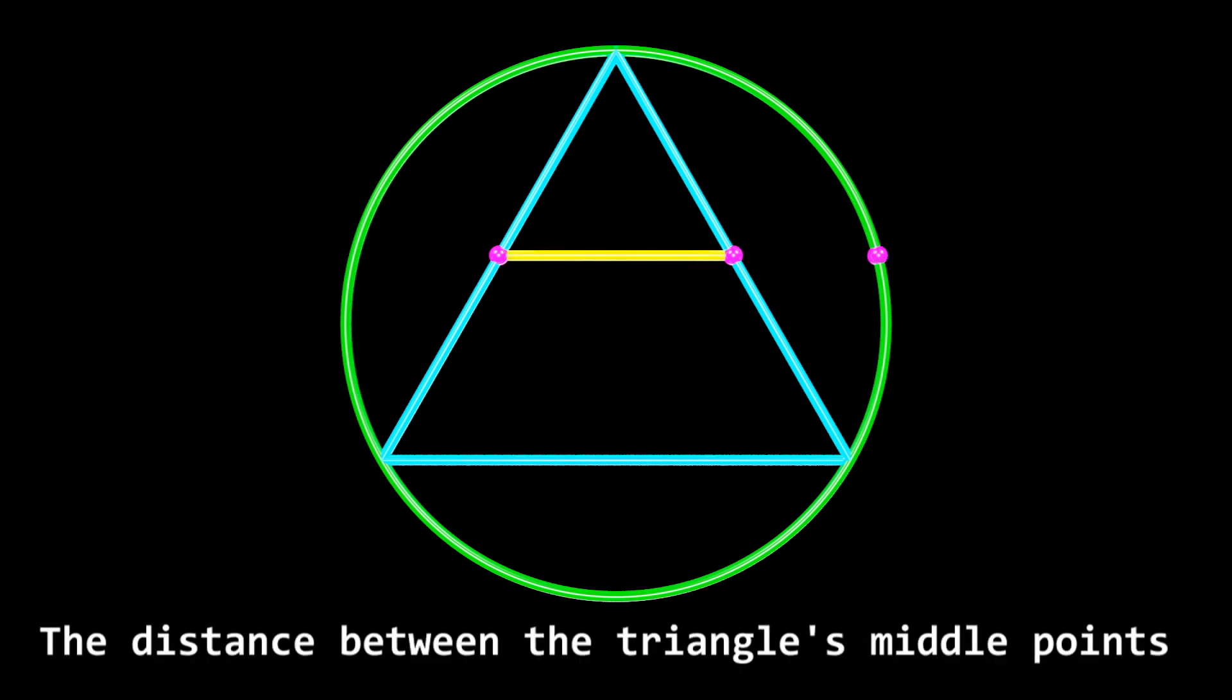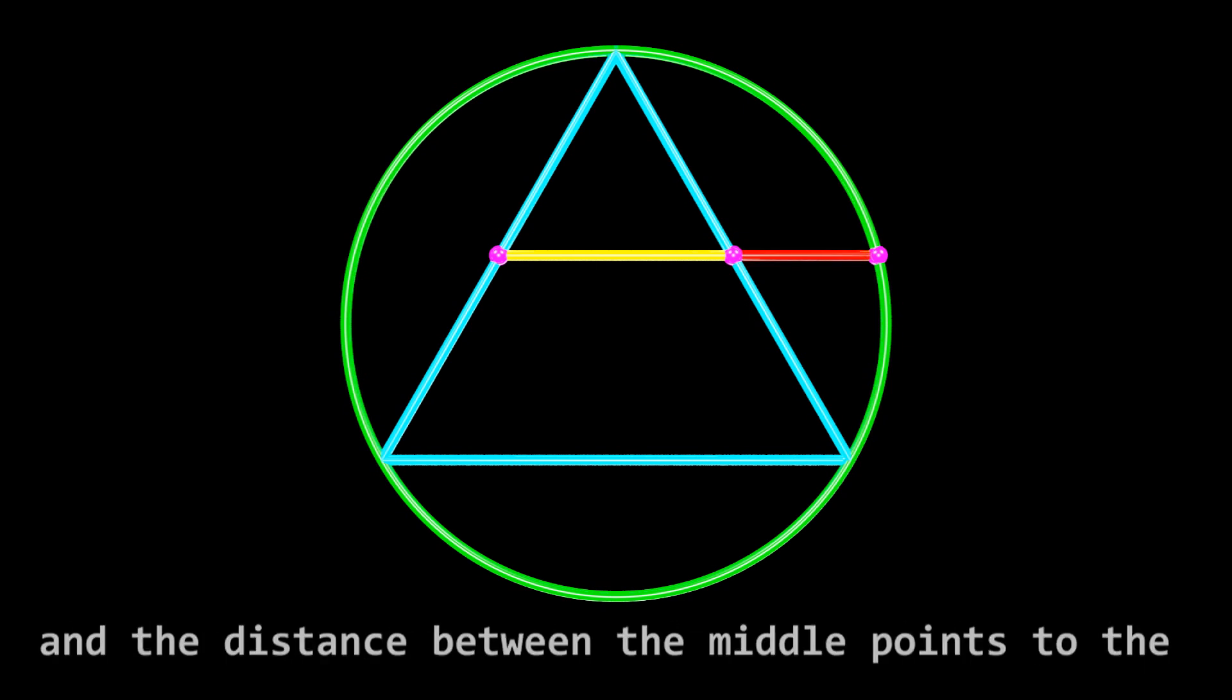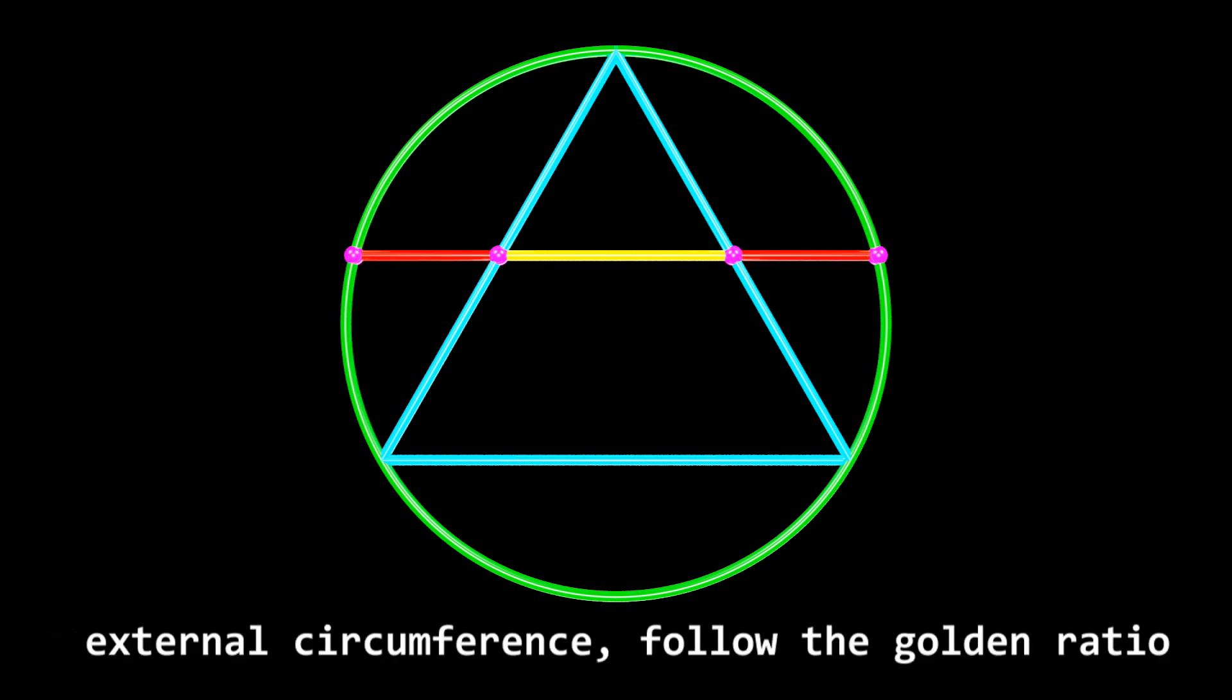The distance between the triangle's middle points and the distance between the middle points to the external circumference follow the golden ratio, a relation covered in chapters 4 and 7.